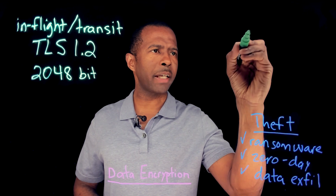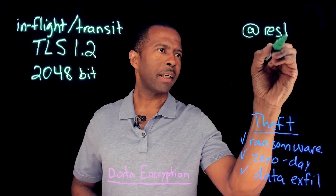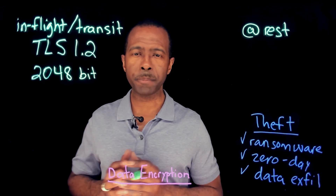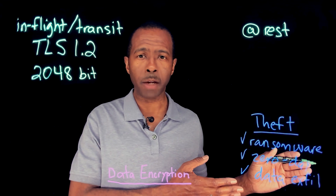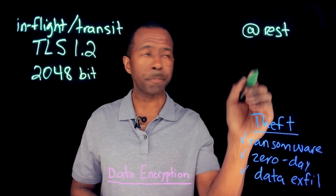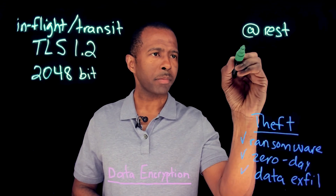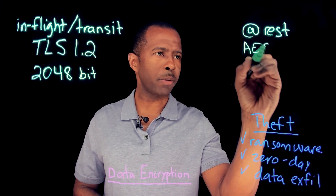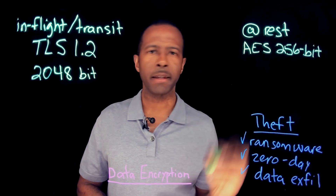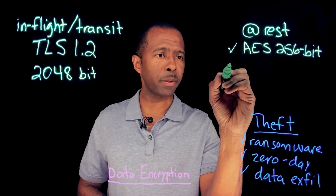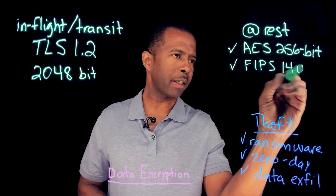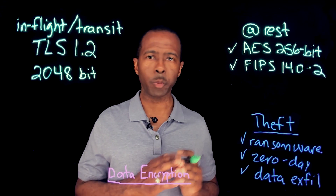Let's talk about data sitting at rest — meaning it's sitting in some type of storage repository, whether it's on-prem, in some type of cloud repository, or maybe object storage. You need to make sure that data is also encrypted at rest. You should be utilizing at least AES 256-bit encryption, and that solution also needs to be FIPS 140-2 compliant, because this is super critical.